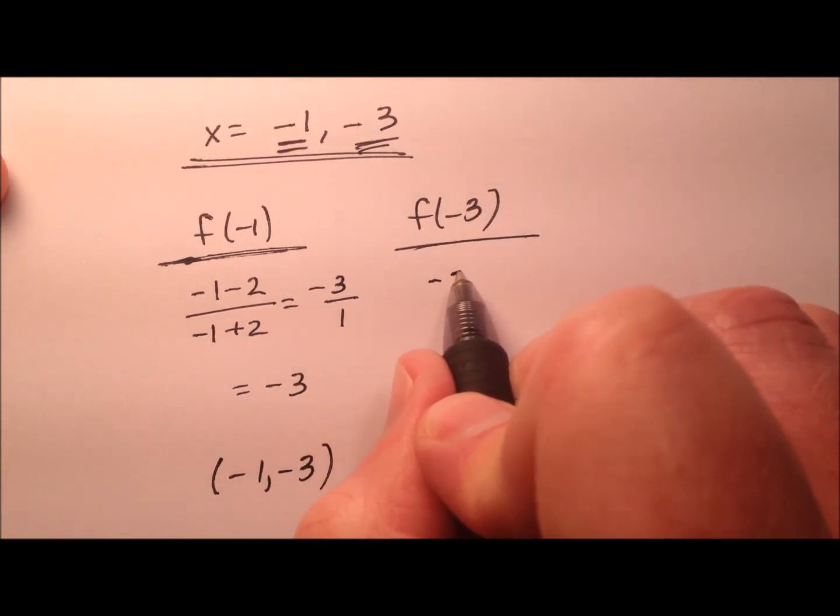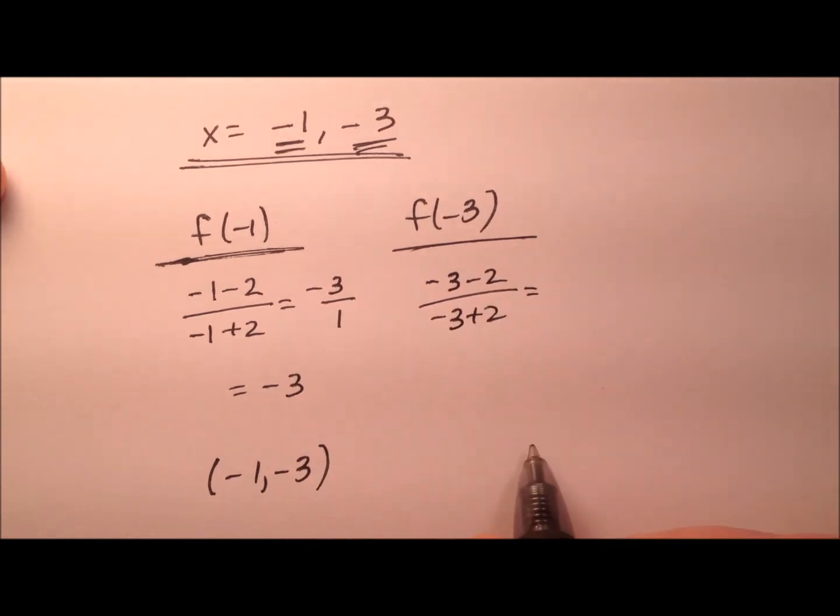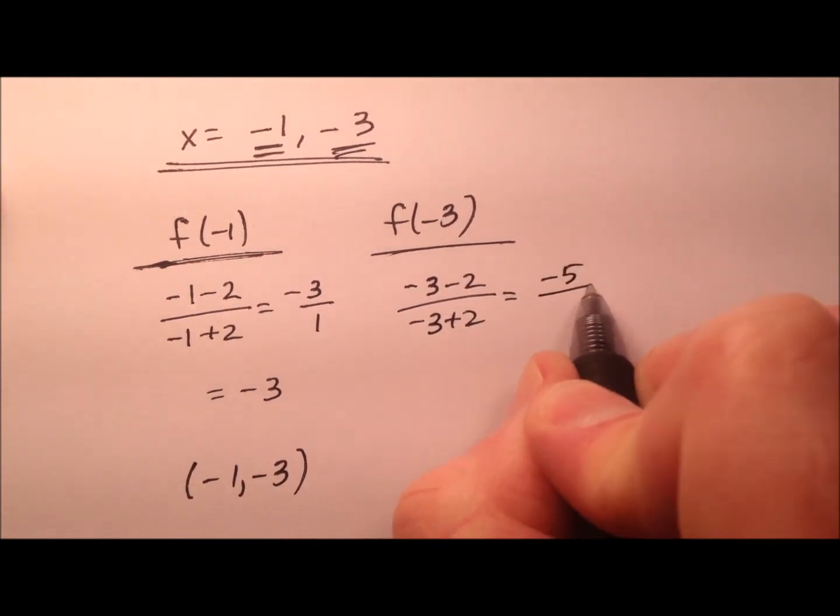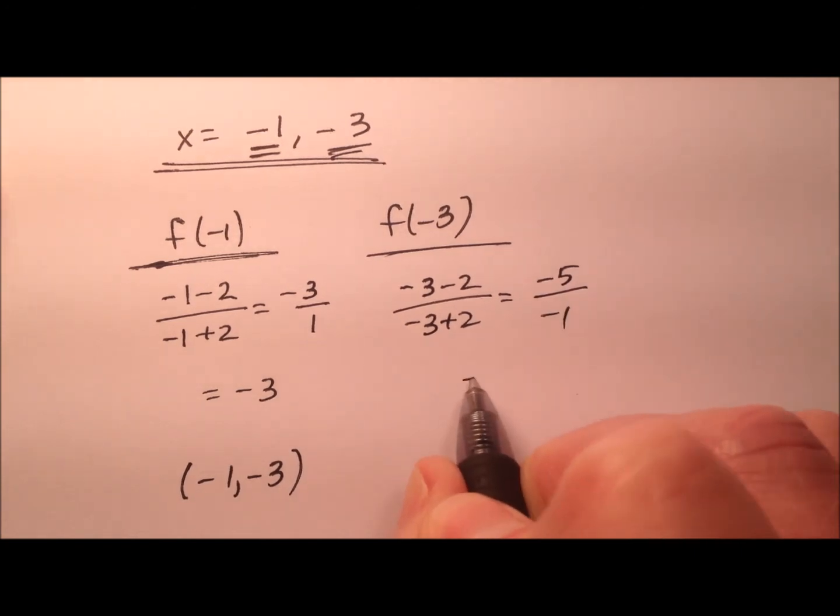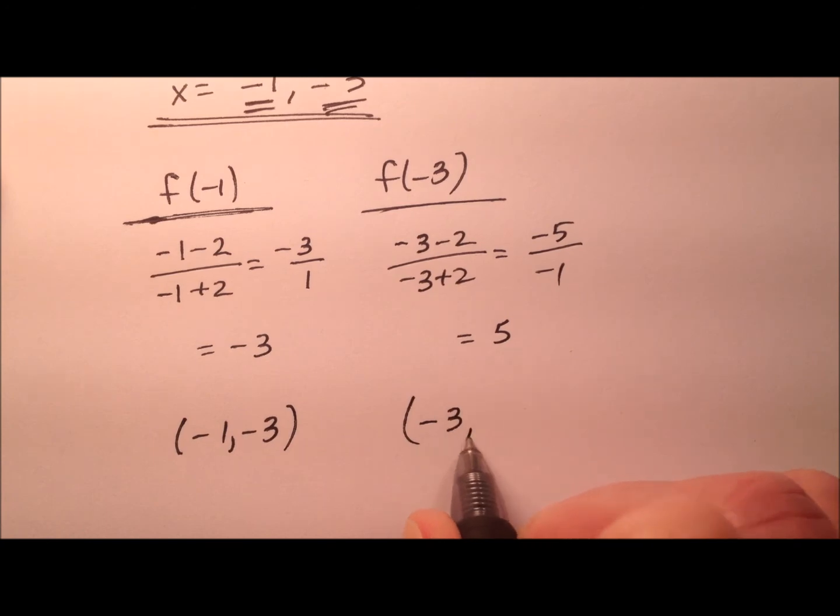And the second one will be negative 3 minus 2 over negative 3 plus 2. So negative 5 over negative 1 makes positive 5. So that second ordered pair is negative 3, positive 5.